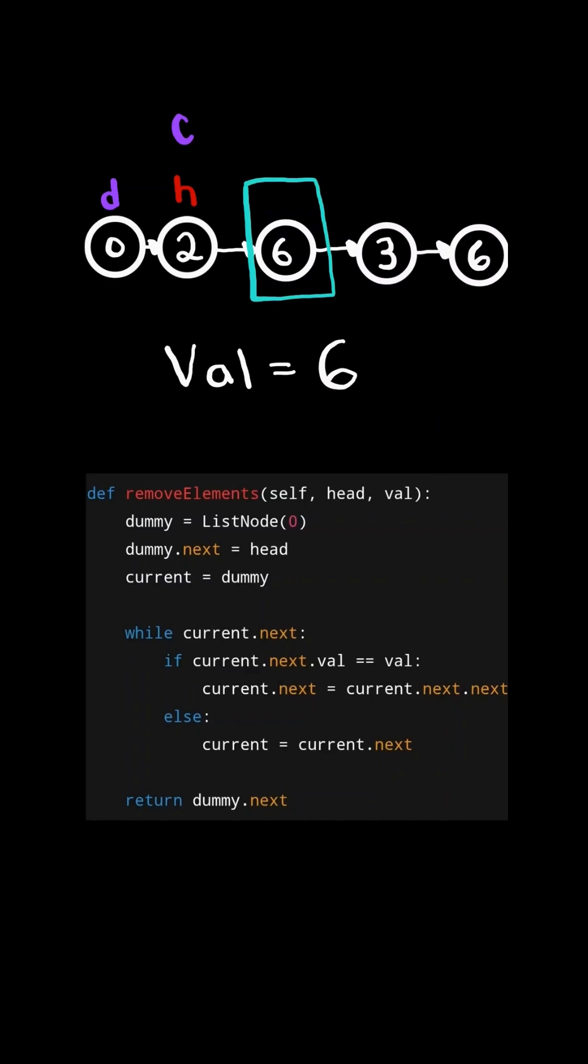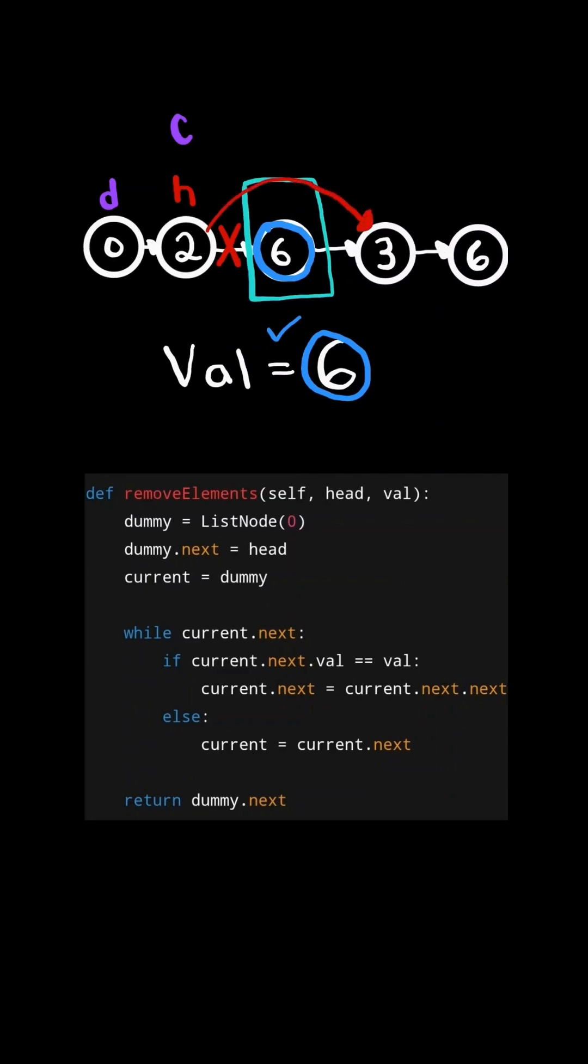Current.next is not null, and the node's value does equal the integer. So we update current.next to point to current.next.next. And in this case, we don't advance current. And we continue.